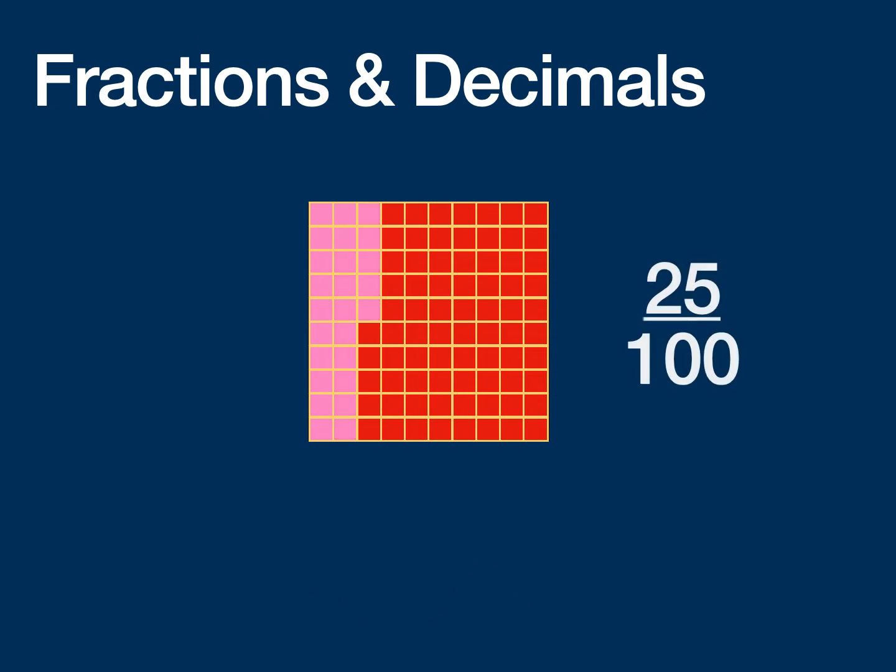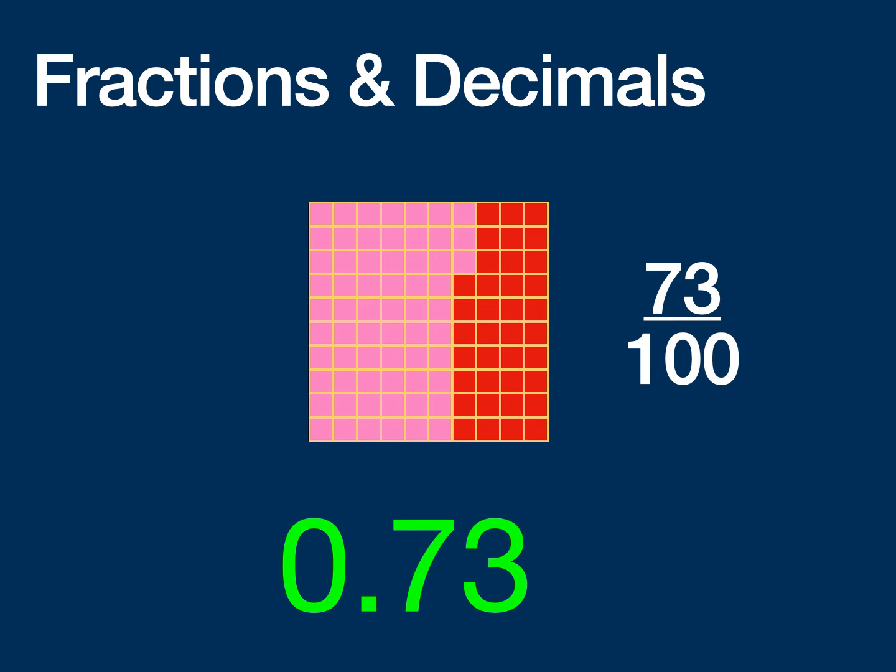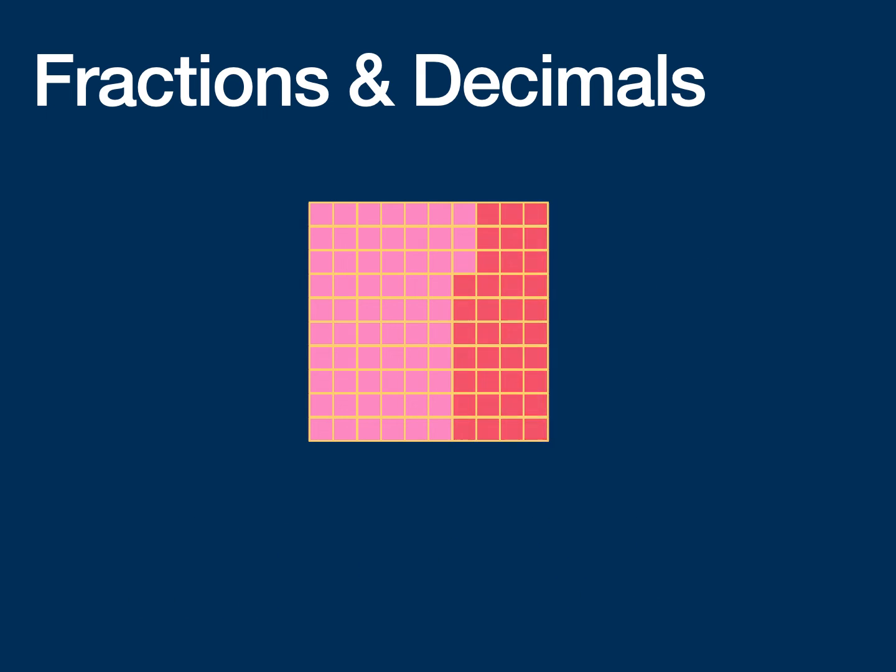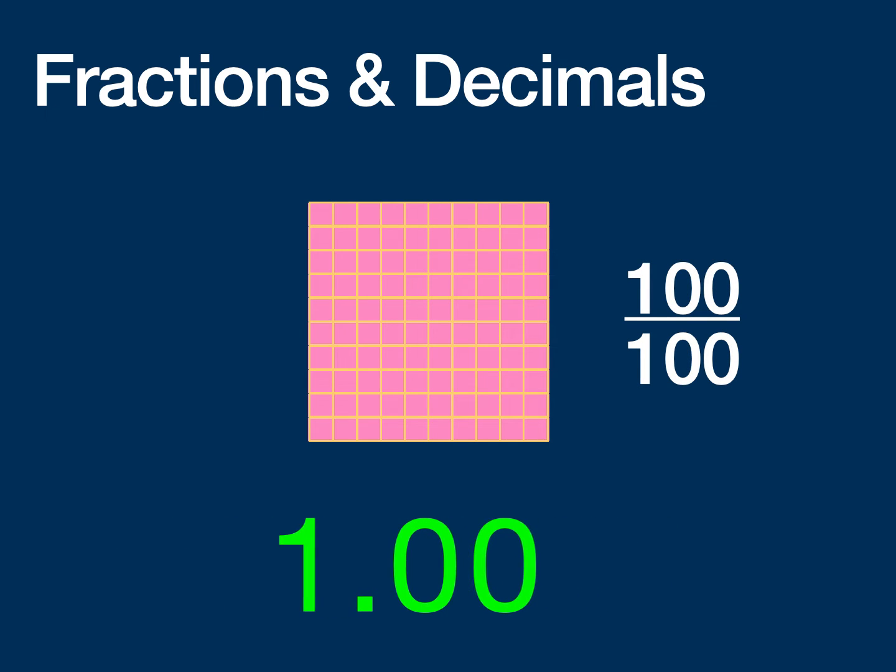Here is 25 over 100 and the decimal is 0.25. And here is 73 over 100 and the decimal is 0.73. And of course, we have 100 over 100, all the pieces. And the way we'd write that fraction is 1.00. We can use two decimal places here because we know that we're talking about the whole cut up into hundreds.